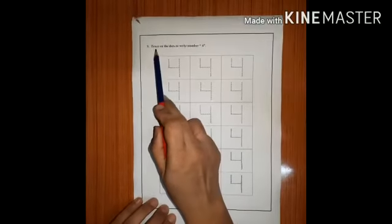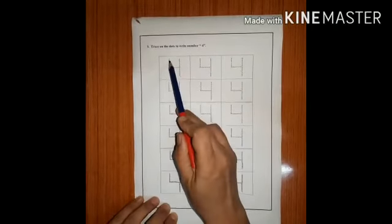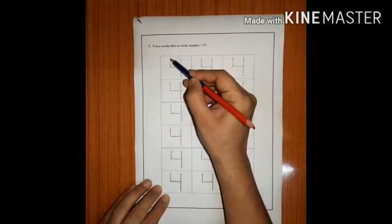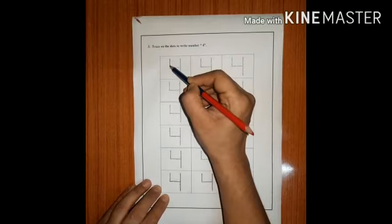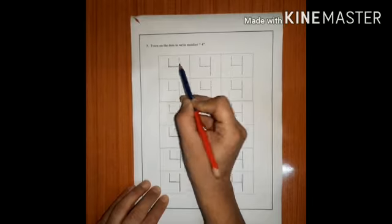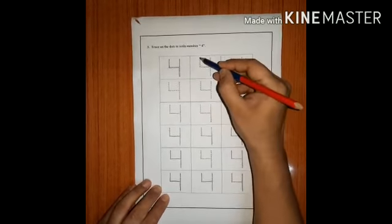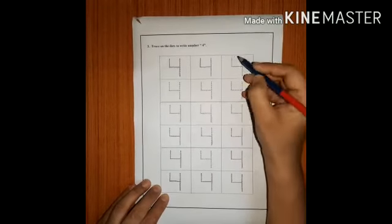The question is, trace on the dots to write number 4. We have to trace on the dots to write number 4. Let's start tracing. Keep your pencil here on the dot and trace a standing line. Then, trace a slipping line, and again a standing line. This is your number 4. This is how you trace number 4.